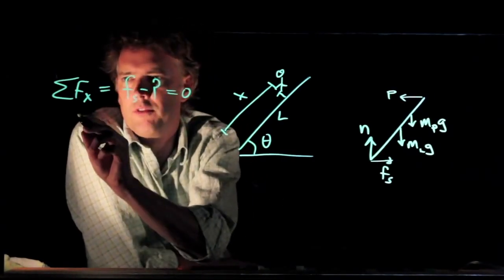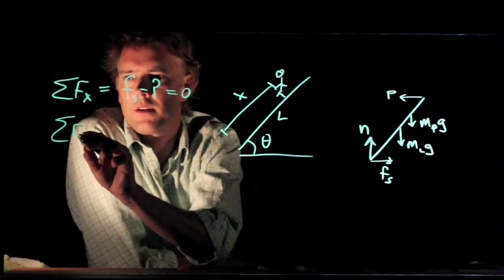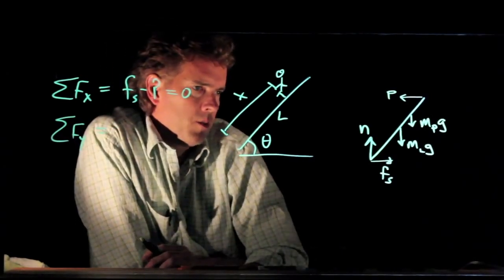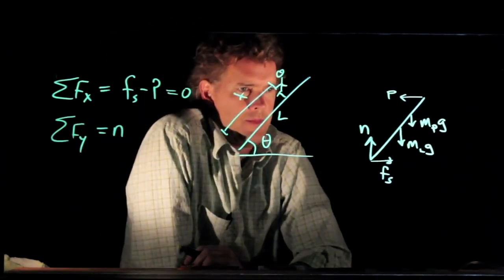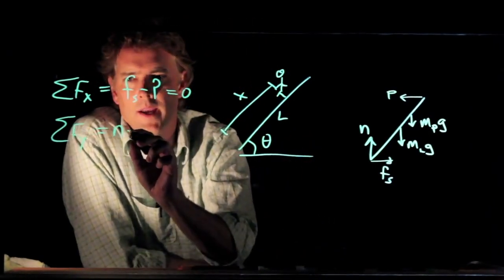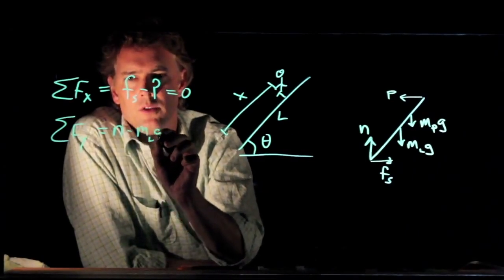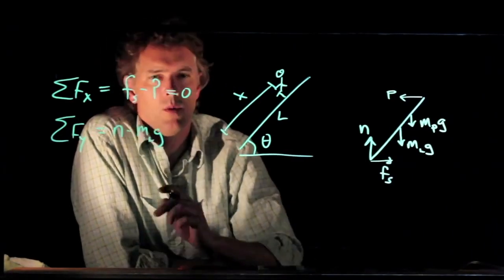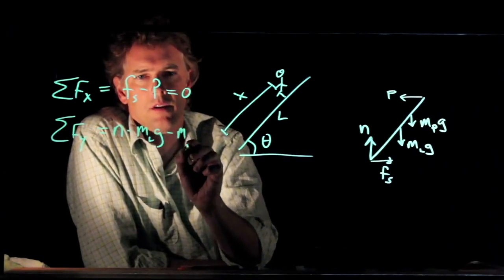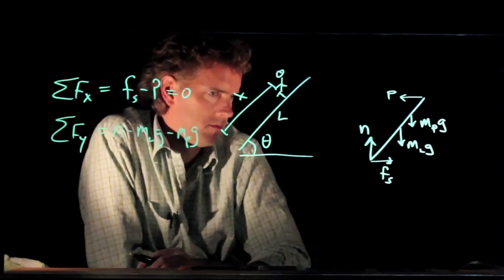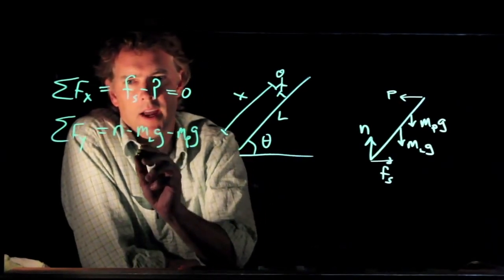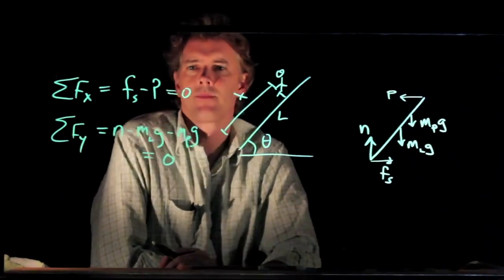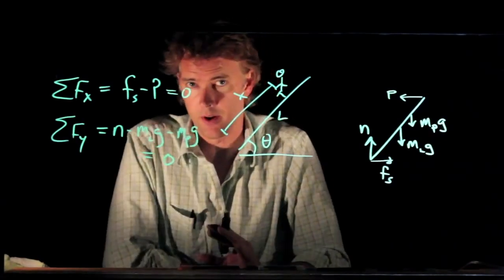What about the forces in the y direction? In the y direction, we have normal force n going up. We have the weight of the ladder, mlg, going down. We have the weight of the person going down. And that is it. All of that has to add up to zero. All right, so that's the easy part of the problem.